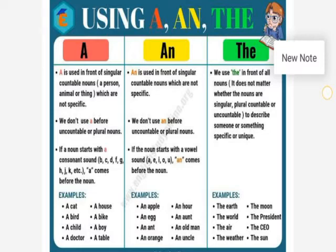An uncle. We use an if the noun starts with a vowel sound. The vowel sounds are A, E, I, O, U. An comes before the vowel sound of any noun.